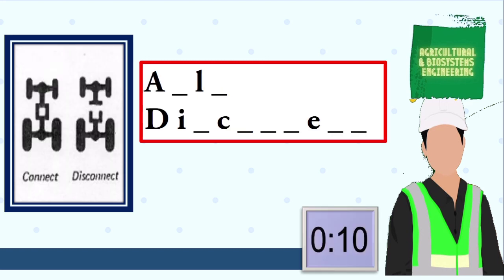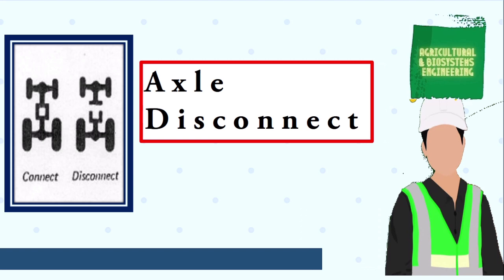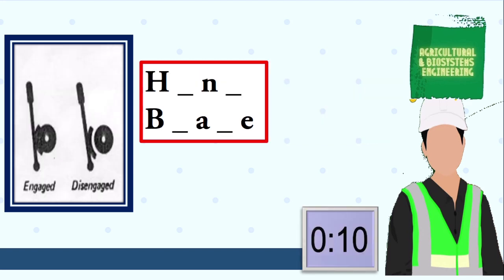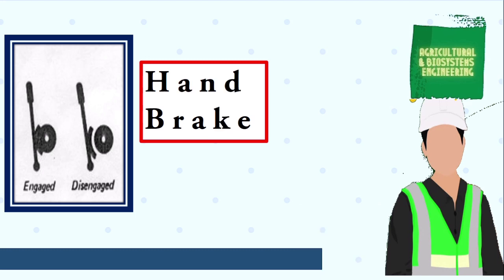Next symbol, your 10 seconds starts now. The answer is axle disconnect. Next symbol, your 10 seconds starts now. The answer is hand brake.